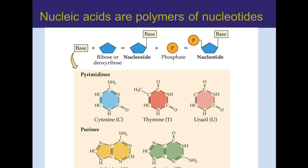The monomer of nucleic acids are nucleotides, and nucleotides are more complicated than the monomers we've covered up till now. A nucleotide is a base, a sugar, and a phosphate, so let's start by looking at bases.